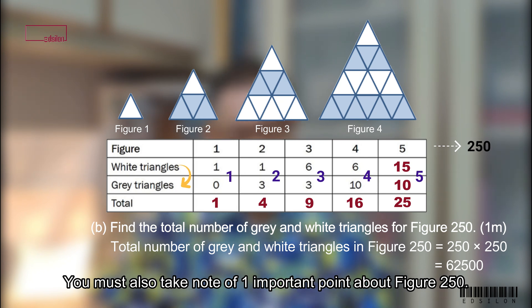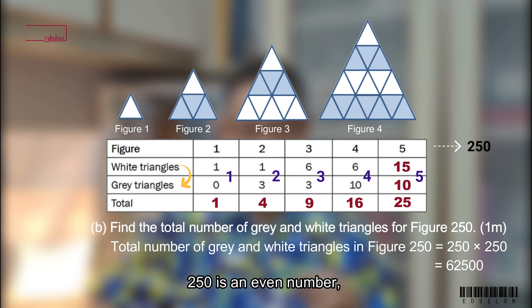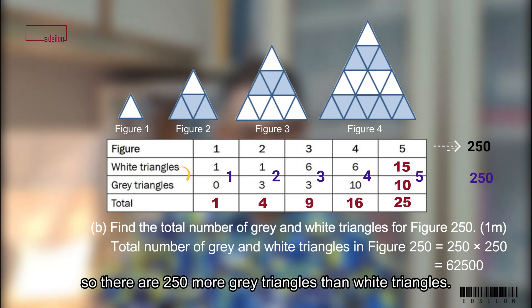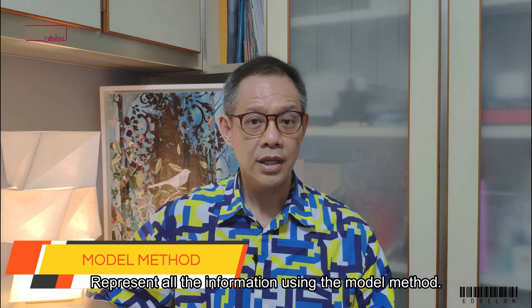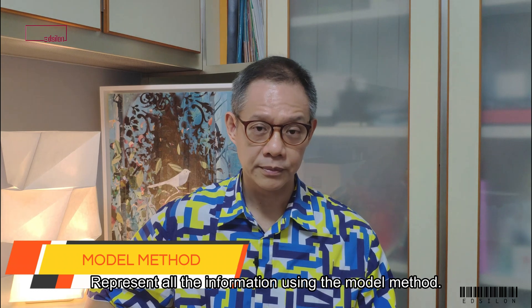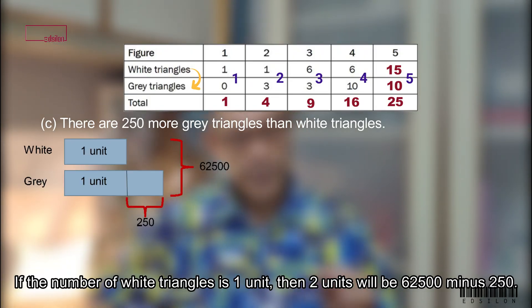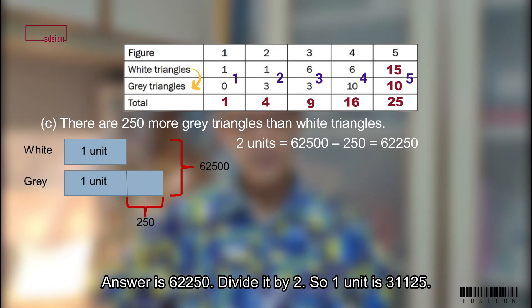You must also take note of one important point about figure 250. 250 is an even number. So, there are 250 more grey triangles than white triangles. Represent all the information using the model method. If the number of white triangles is one unit, then two units will be 62,500 minus 250. Answer is 62,250.